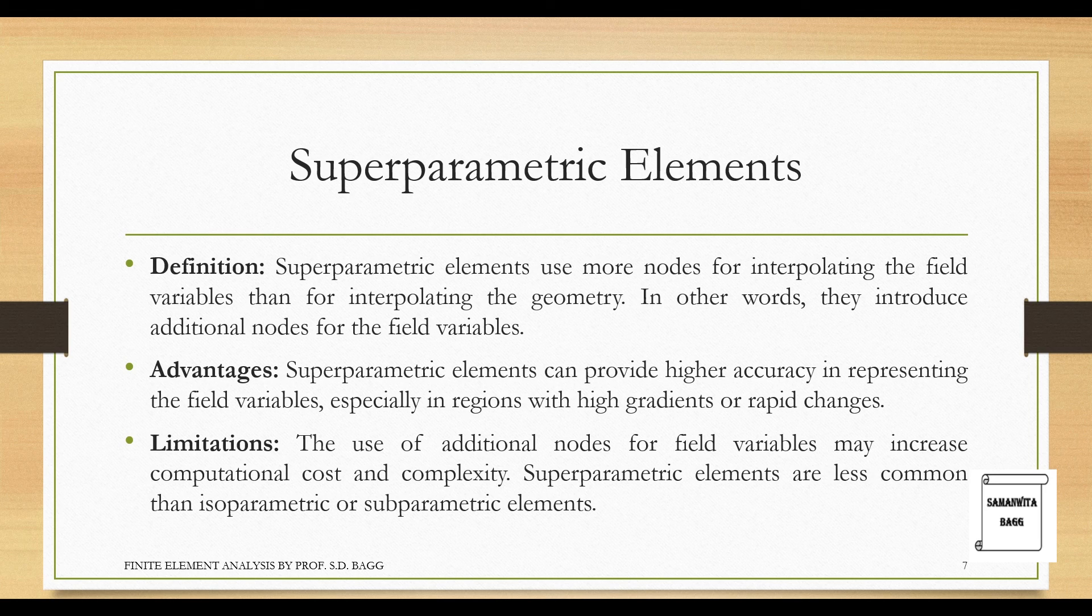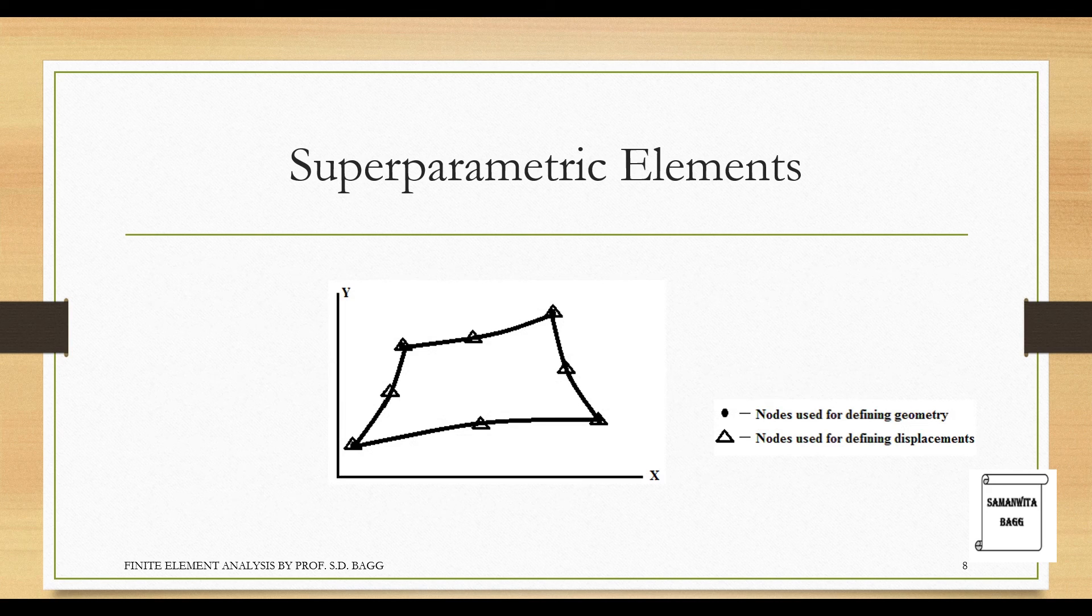Next we will talk about superparametric elements. Superparametric elements use more nodes for interpolating the field variables than for interpolating the geometry. In other words, they introduce additional nodes for the field variables. You can see in the diagram here. The dot indicates the nodes used for defining geometry, that is 4. And triangle represents the nodes used for defining displacement, that is 8. So field variables are represented at 8 places, for finding displacement and temperature which is not required. Because say we have a quadrilateral with only 4 nodes. So what is the use of finding for 8 of them?